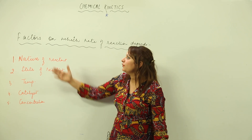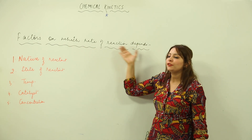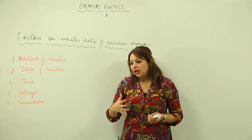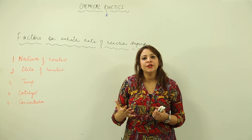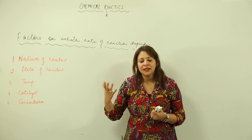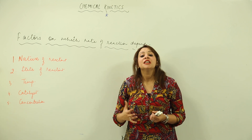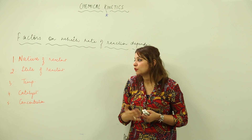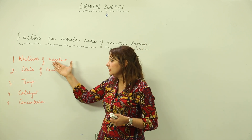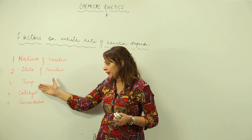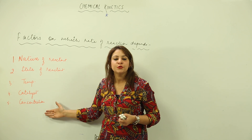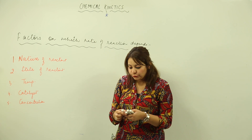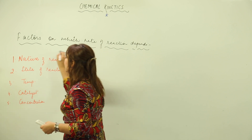We are looking at the factors on which the rate of reaction depends. The rate of reaction is the change in concentration of chemical species with the passage of time. There are many factors which affect the rate of reaction: the nature of reactant, state of the reactant, temperature, catalyst, and concentration. These are the five major factors which affect the rate of reaction.